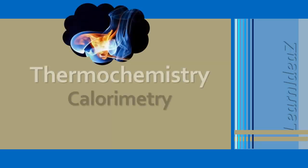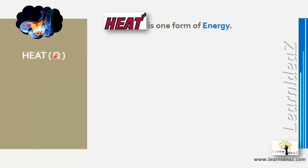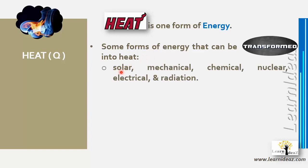In this video we'll talk about calorimetry, which is part of thermochemistry. We start by defining heat. Heat is represented by q and is one form of energy. Other forms of energy can also be transformed into heat, like solar, mechanical, chemical, nuclear, electrical, and radiation.